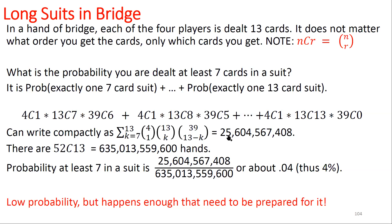So we come up with 25,604,567,408. Compared to bank accounts, that's a lot of money. But compared to the number of hands? The number of hands is 52C13, which is 635,013,559,600. If you look at the ratio of them, the ratio is only 0.04, which is 4%.